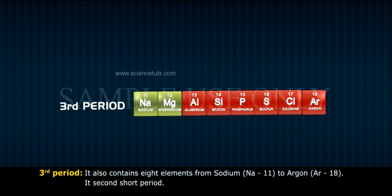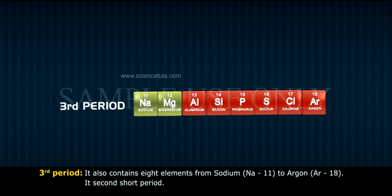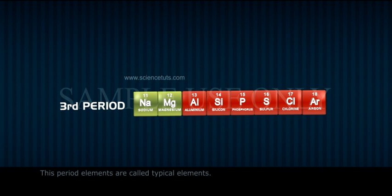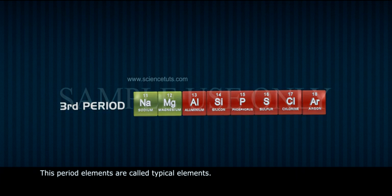The third period also contains eight elements from sodium, Na-11, to argon, Ar-18. It is the second short period. The elements of this period are called typical elements.